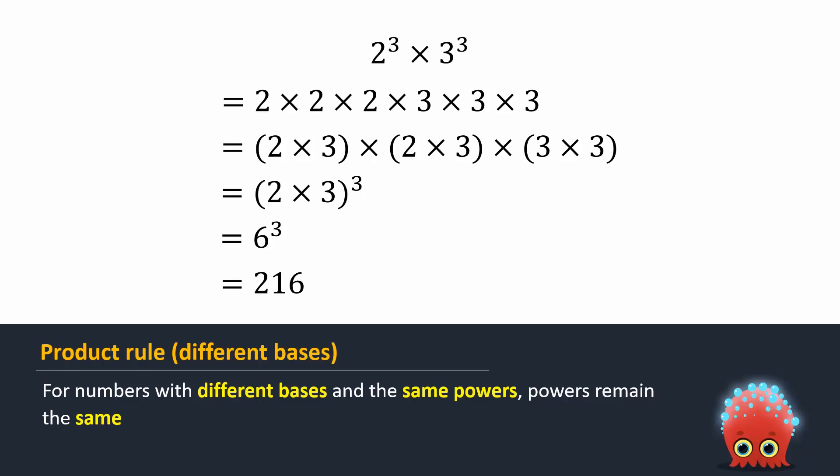If x and y are two different numbers, then symbolically we can write x raised to the power n times y raised to the power n equals x times y whole raised to the power n. Here, x and y are any rational number other than 0 and n is an integer.